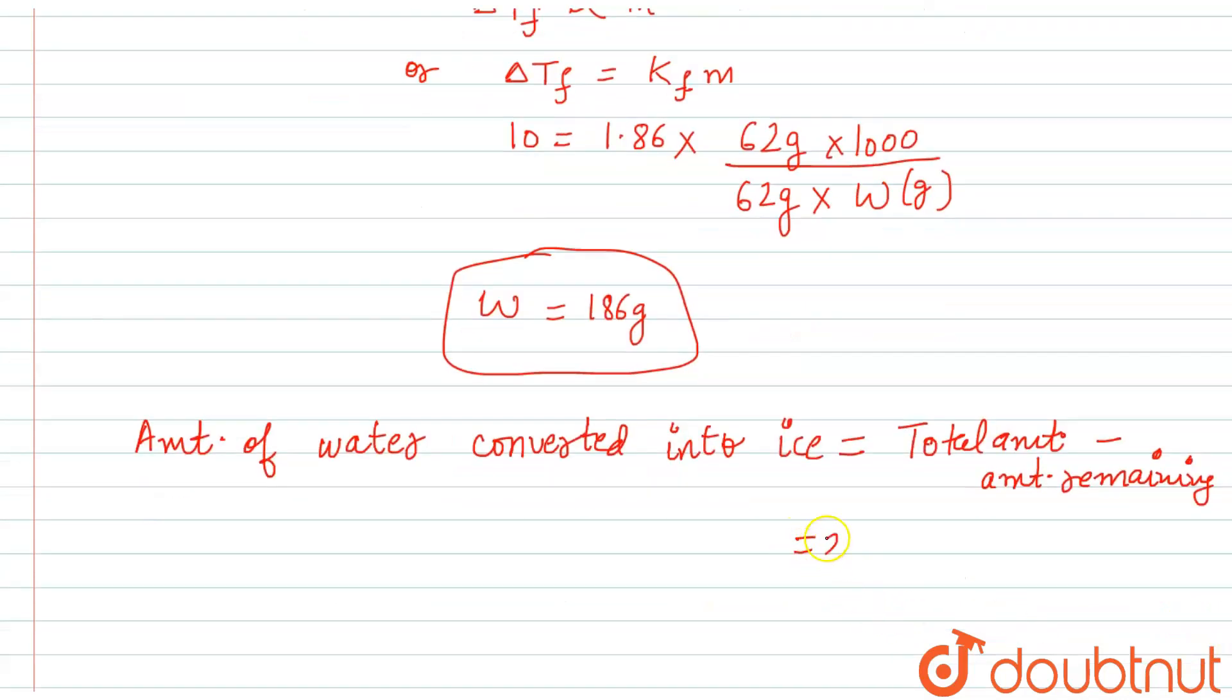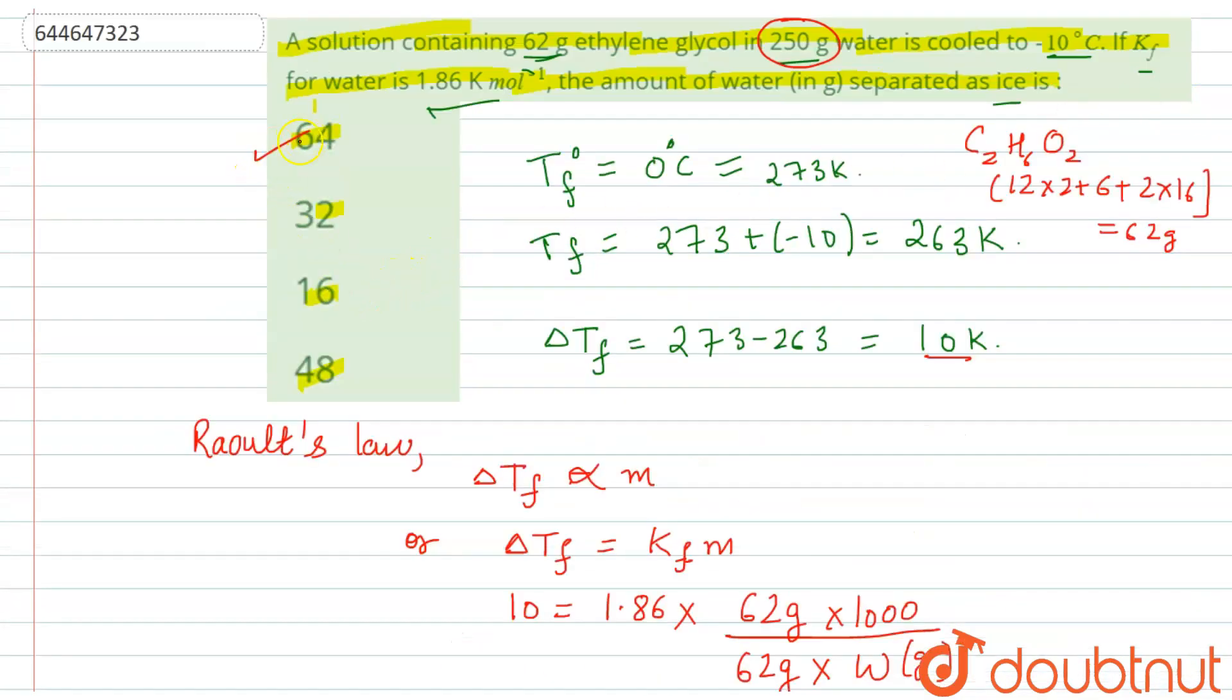So total amount is 250 minus remaining is 186, so this is 64 grams. So this amount of water is converted as ice. So the answer is 64, that is option 1.